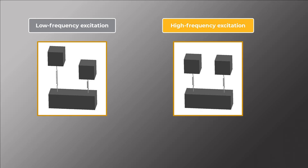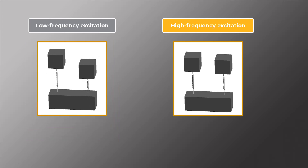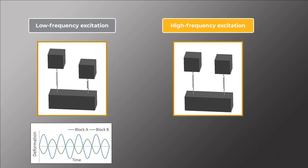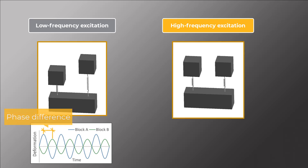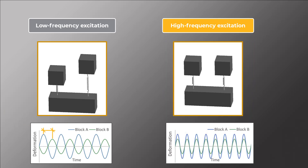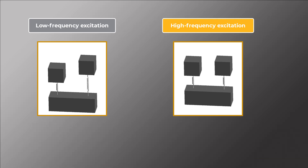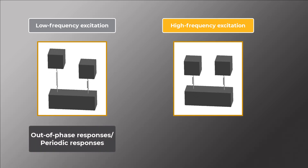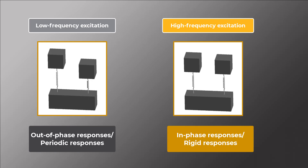Can you see the difference? On the left side, when one cube is going up, the other one is going down. If we plot the two deformations over time, we can see there is a phase difference between the two waves. On the right side with high frequency excitation, although the amplitudes of the two cubes are different, they reach their peak displacement in the same direction at the same time. The left animation shows out-of-phase responses, which may be referred to as periodic response, while the right one shows in-phase responses, demonstrating a rigid response.